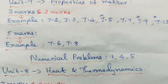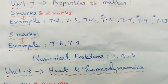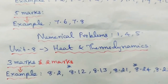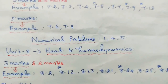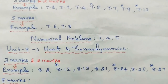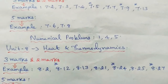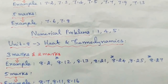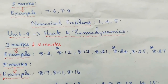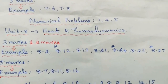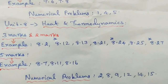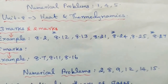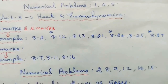Unit 8: Heat and Thermodynamics — 3 marks and 2 marks. Example problems: 8.2, 8.12, 8.13, 8.21, 8.24, 8.25, and 8.27. Then 5 marks problems: 8.7, 8.11, and 8.16. Numerical problems: 2, 9, 11, 12, 14, and 15.